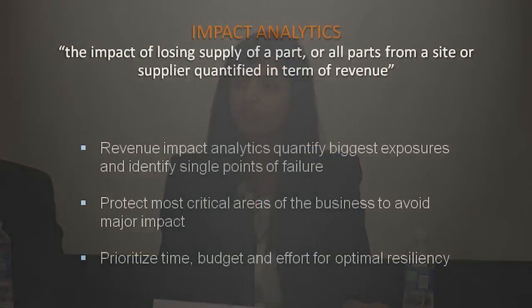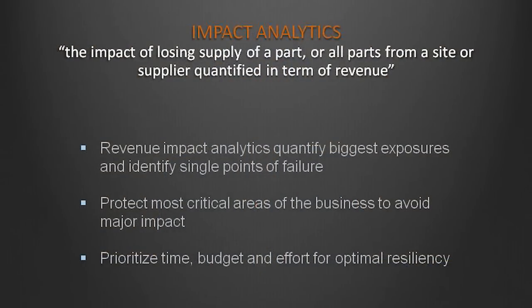It is revenue impact-based, which is taking apart your bill of material down to the part number level and saying: where is each part used? What is the revenue associated with that product? And calculating, for each part, what does it mean to my business if I wasn't able to get this single-sourced part? How much of my revenue would be impacted?